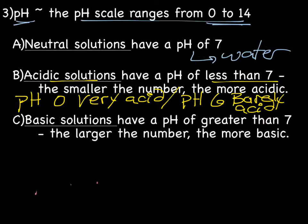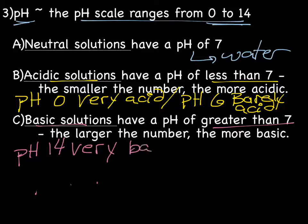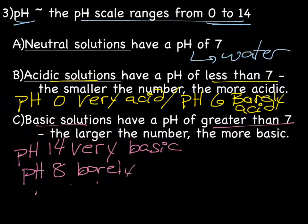And then we have basic solutions, which have a pH of greater than 7. And in this case, the larger the number, the more basic. So something with a pH of 12, or we could say 14, is very basic. And a pH of, let's say, 8 is barely basic.